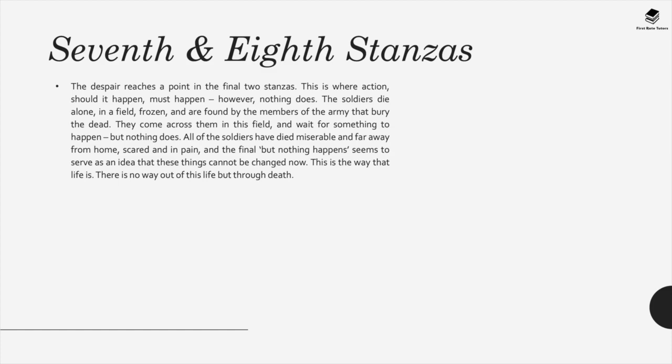In the seventh and eighth stanzas, despair reaches its final low. The soldiers are dying alone on a field, frozen to death, found by those who bury the dead. Members keep coming across more bodies on the field — a miserable and faraway death. What's caused these deaths is nature, yet still 'nothing happens.' This serves the idea that these things cannot be changed, but also that people are dying needlessly — Owen making a wider point about the horrific conditions soldiers in the First World War endured.